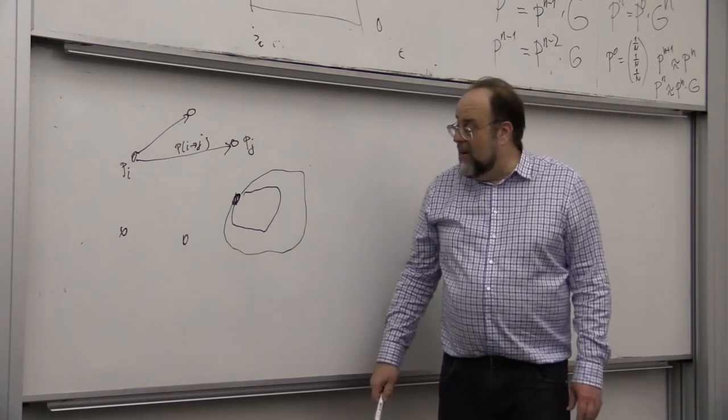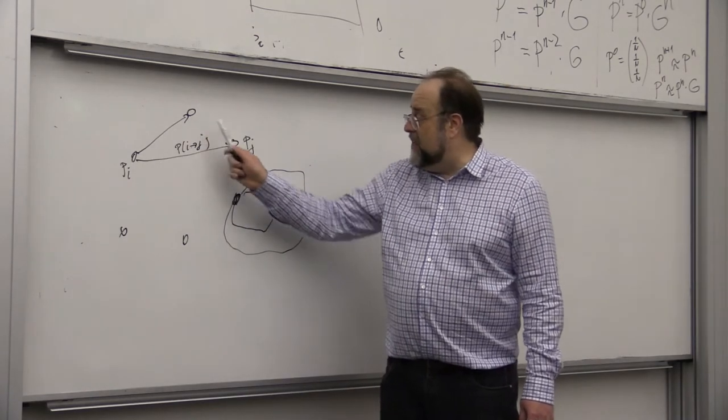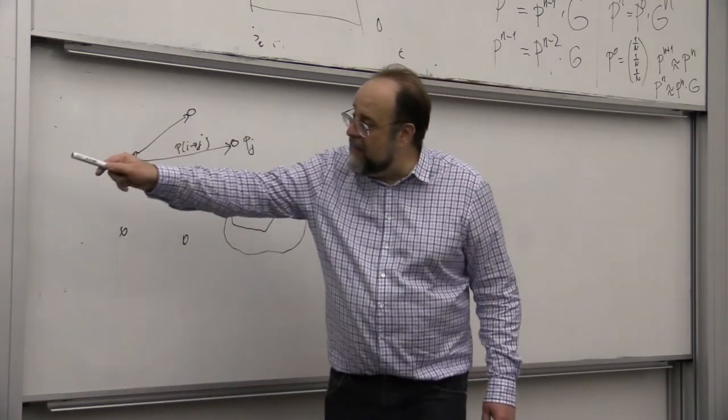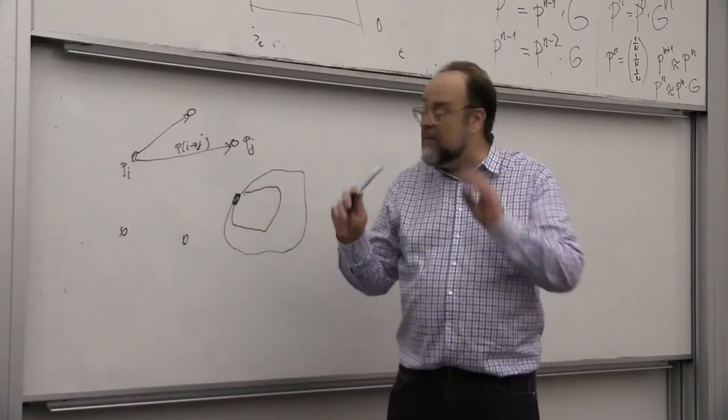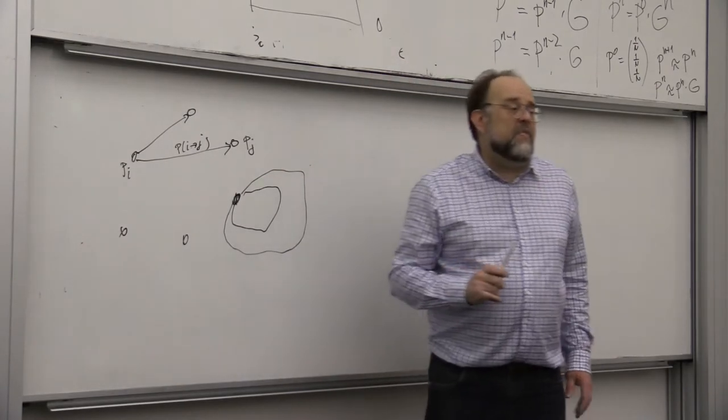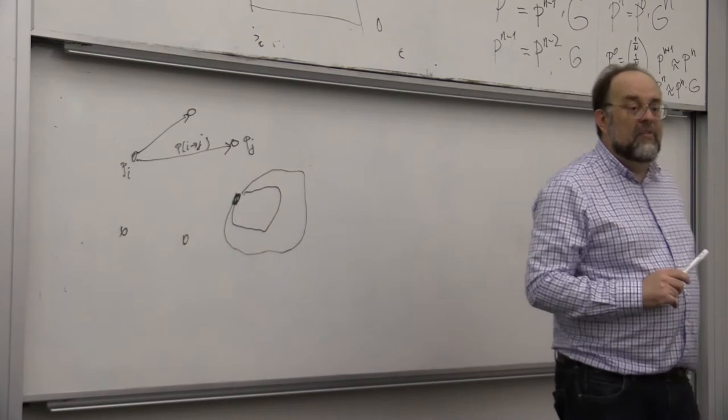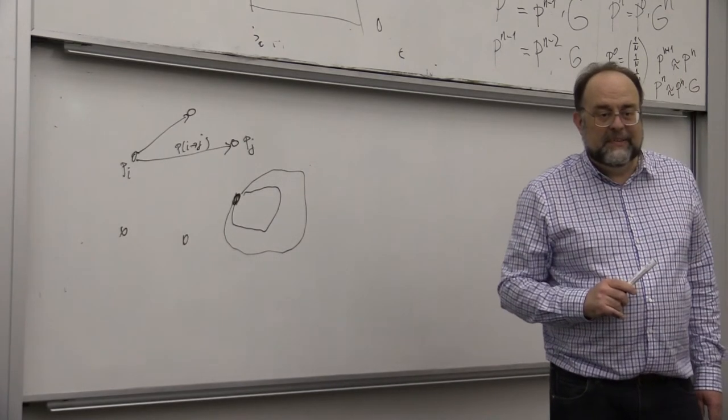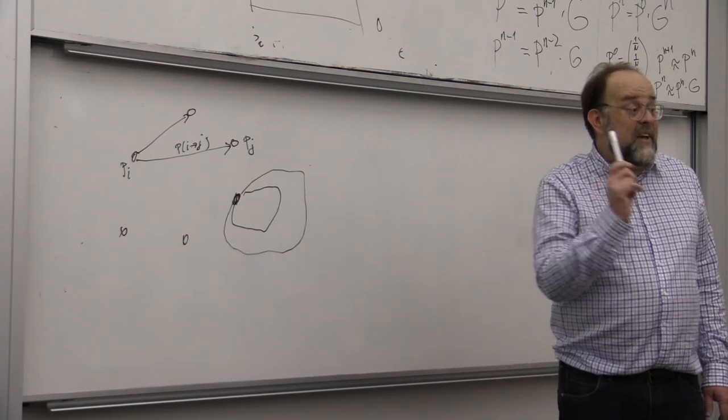Now you tell me, why is it the case that Google graph given by the matrix with this tweaked matrix, why is it strongly connected? Because we already say that you can always randomly teleport to any. Exactly.